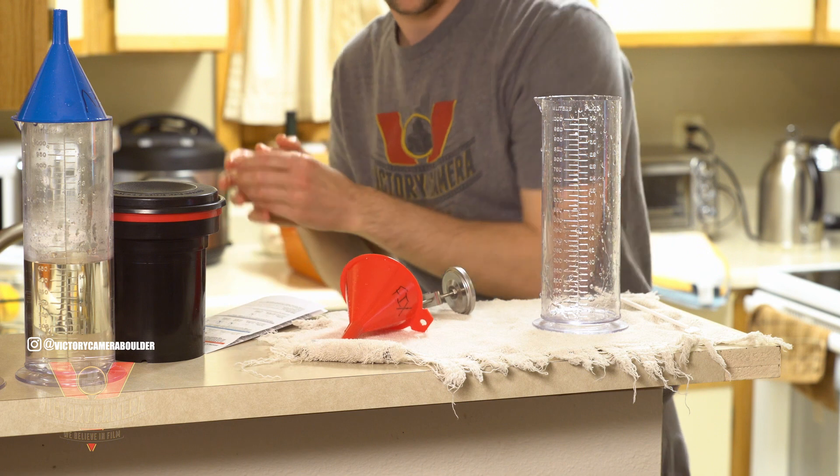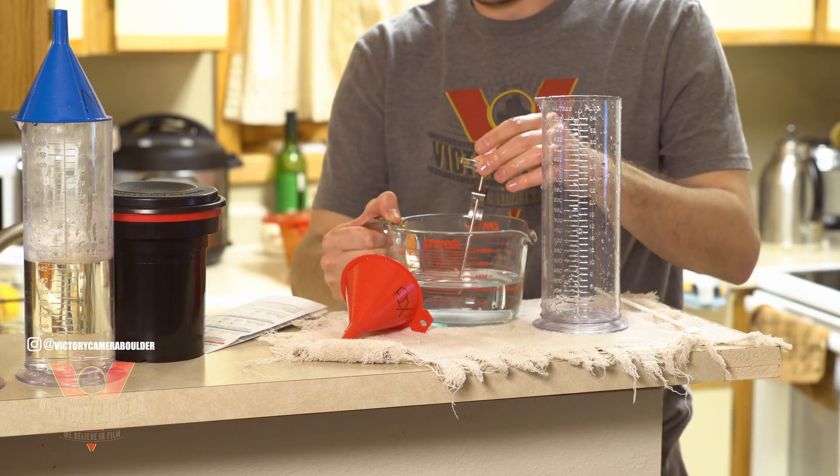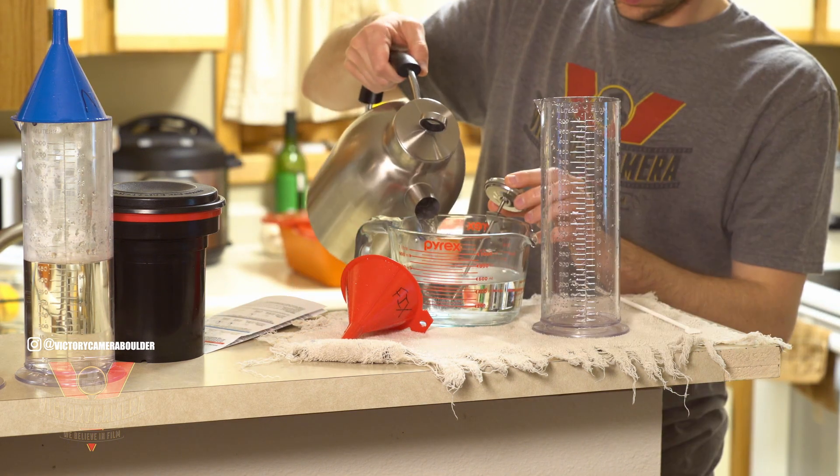Next, we'll mix our Blix, short for bleach and fix. Together, this solution will neutralize, then strip the light-sensitive silver from our film.